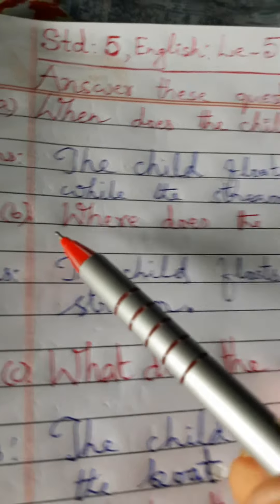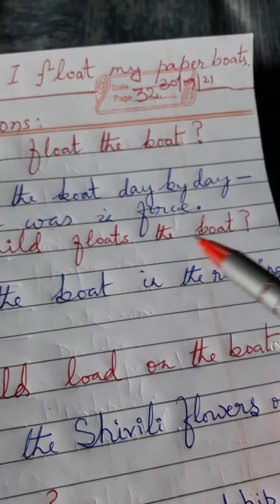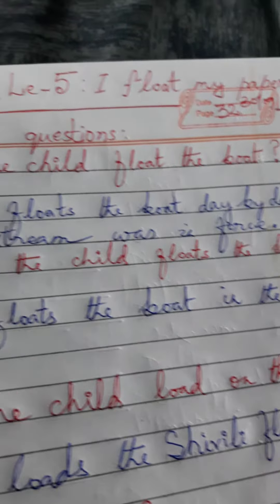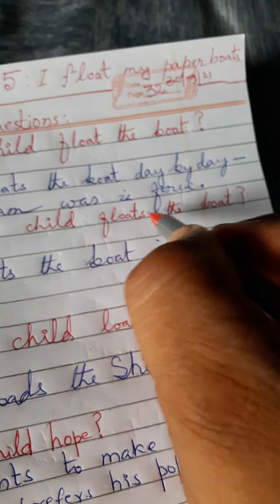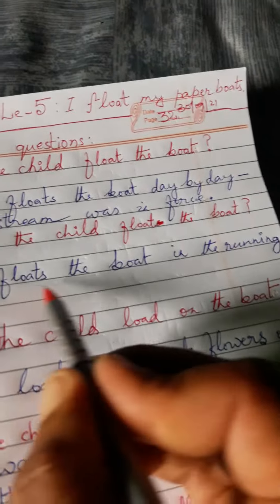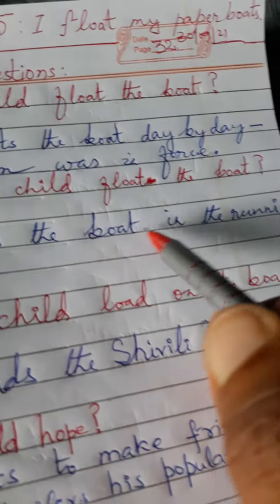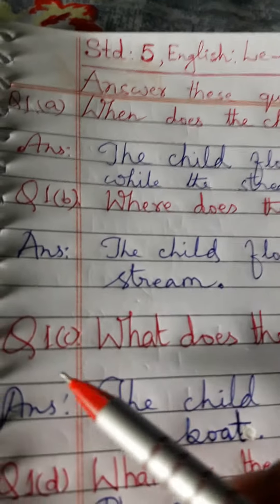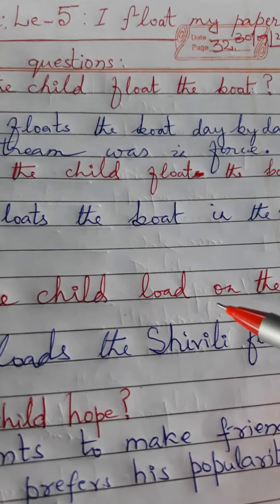Question 1b: Where does the child float the boat? Answer: The child floats the boat in the running stream.